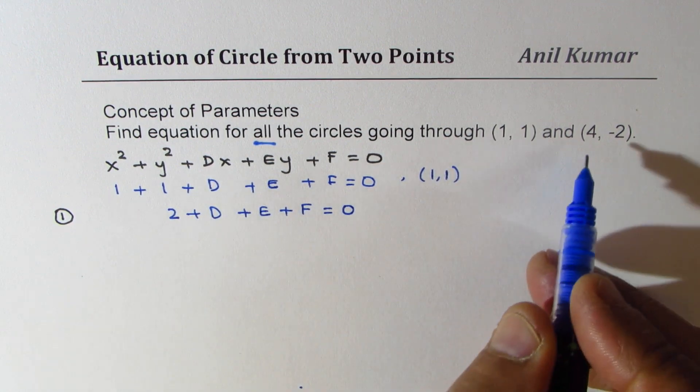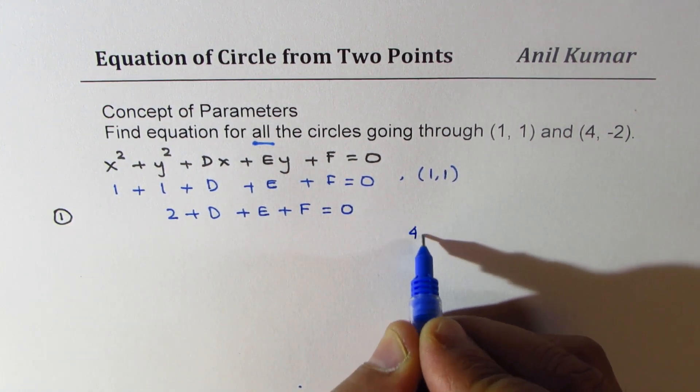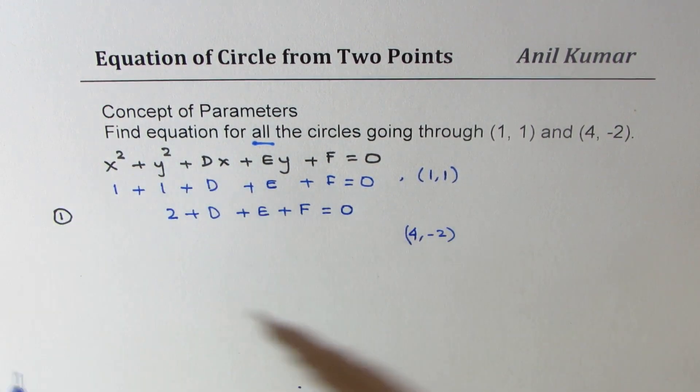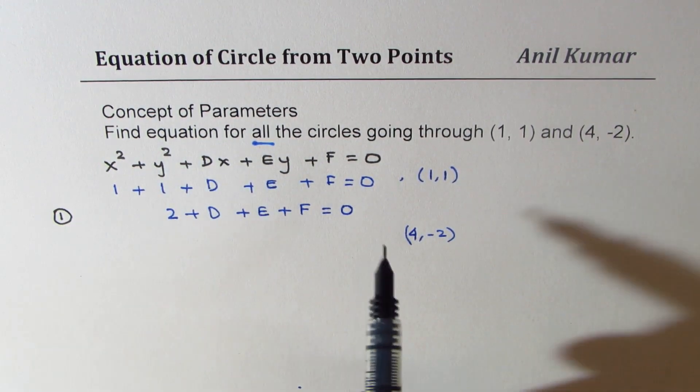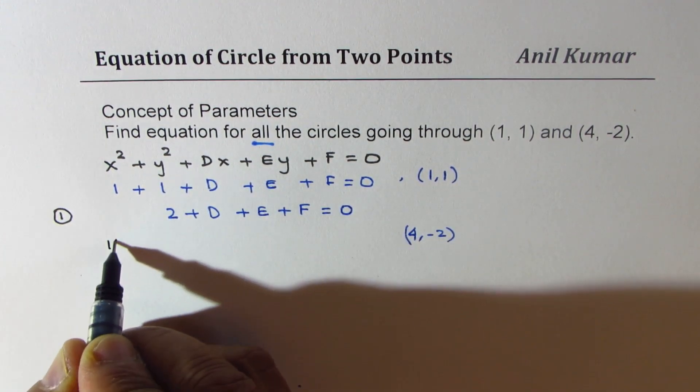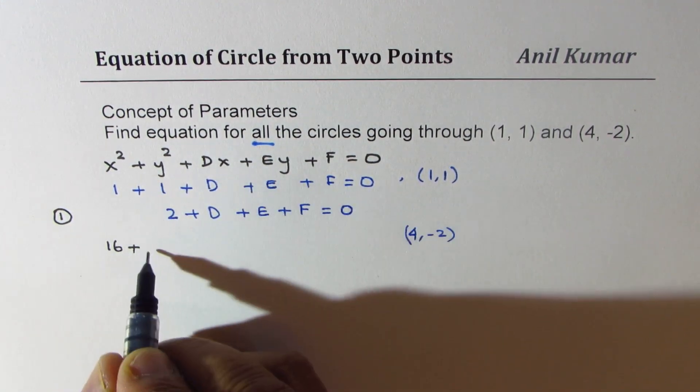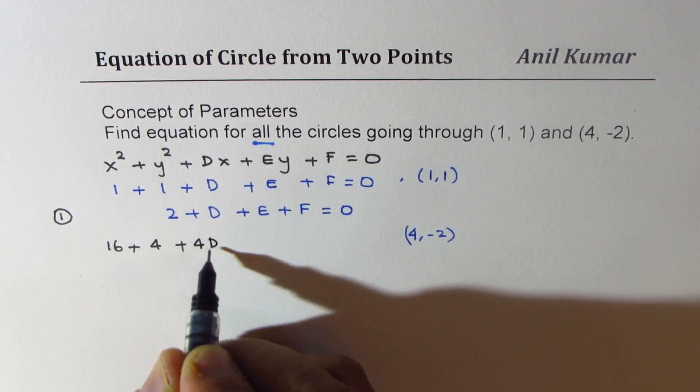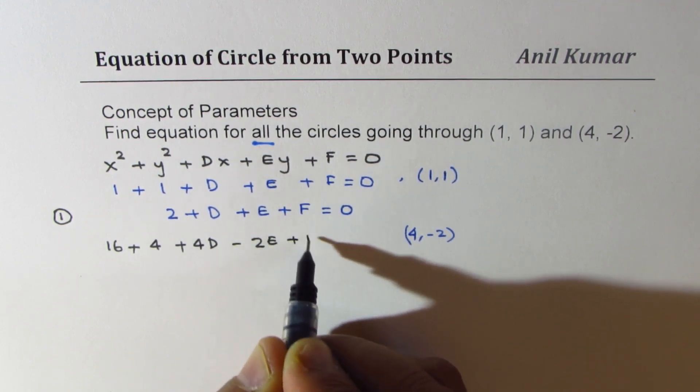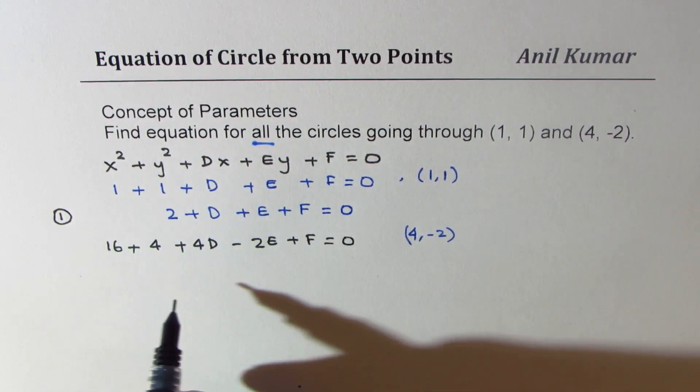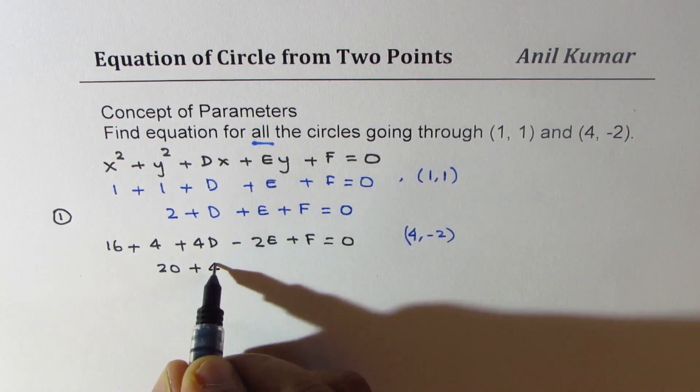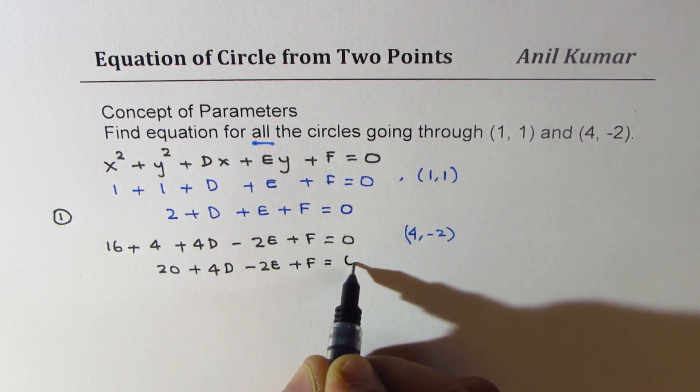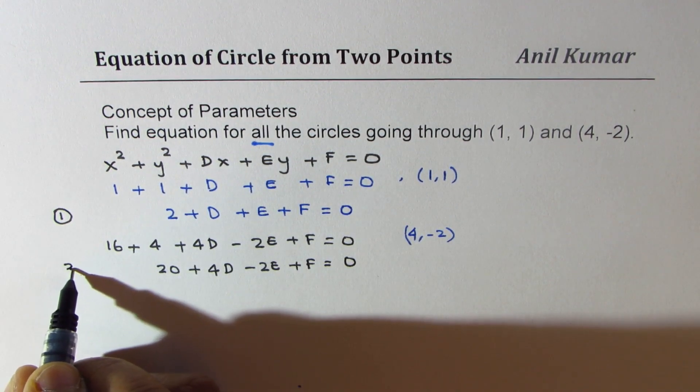Now let us use the other point which is (4,-2). 4 is the x value, y value is -2. 4² being 16, so we get 16 plus (-2)² is 4, then 4d - 2e + f = 0. Combining these two terms we get 20 + 4d - 2e + f = 0. Let us call this equation number 2.